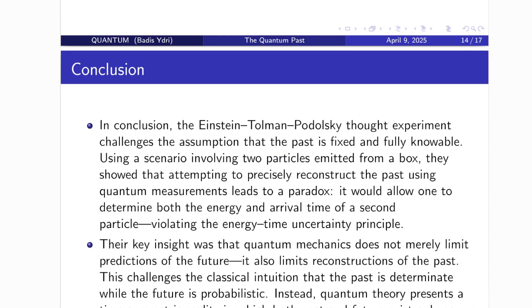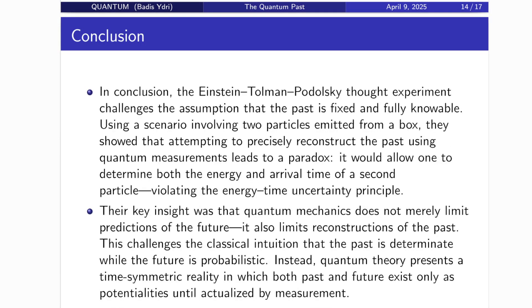Conclusion. The quantum past revisited. To conclude, the Einstein-Tolman-Podolsky thought experiment challenged one of our deepest assumptions. That the past is fixed, factual, and fully knowable. Using a simple setup involving two particles escaping from a box, they showed that trying to reconstruct the past with quantum precision leads to a paradox. One that would allow us to know both the energy and arrival time of a particle, violating the energy-time uncertainty principle. Their insight was revolutionary. Quantum mechanics doesn't just limit what we can predict about the future. It limits what we can remember about the past.